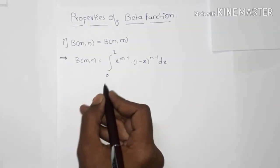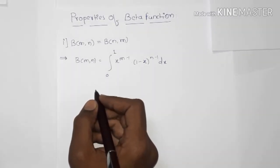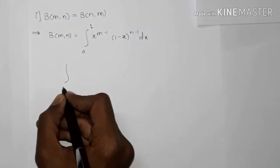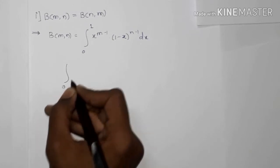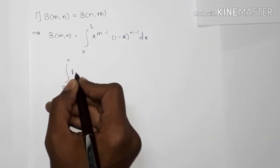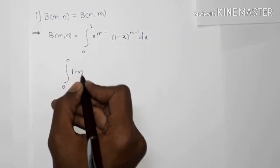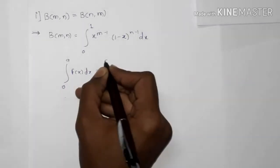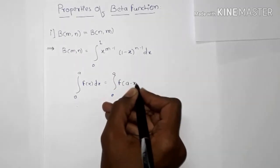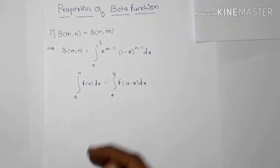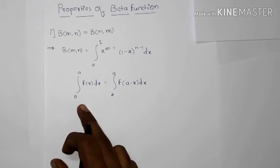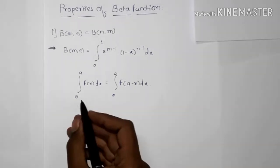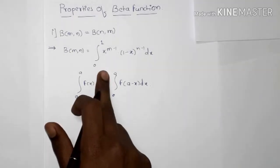We know the property from definite integrals — that is, the integral from 0 to a of f(x) dx is equal to the integral from 0 to a of f(a minus x) dx. We know this property from previous standards, that is from 12th standard. So we can use this property here.